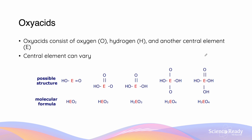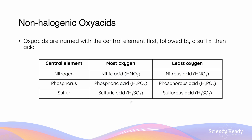The central element can vary. Here are the possible structures of oxy acids which include HEO2, HEO3, H2EO3, H2EO4, and H3EO4, where E is the central element which can vary. Non-halogenic acids are simply oxy acids which do not contain halogens. They follow the same ruling with their possible structures.